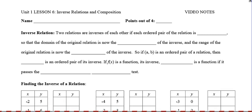Hello, this is Unit 1, Lesson 6. We're looking at Inverse Relations and Composition. So let's do a definition first. An inverse relation: two relations are inverses of each other if each ordered pair of the relation is switched, so that the domain of the original relation is now the range of the inverse.